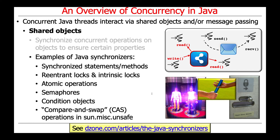Here's a quick laundry list of Java synchronizers — I won't require you to know these for this class, but examples include synchronized statements and methods, reentrant locks and intrinsic locks, atomic operations, semaphores, condition objects, and low-level lock-free compare-and-swap operations. These allow atomic operations, mutual exclusion, and coordination. We won't cover them in detail here since this class is about parallelism, not concurrency.